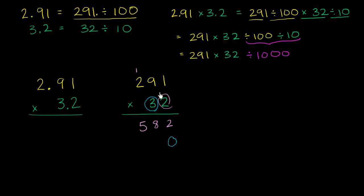So 30 times 1 is 30. That's why we say 3 times 1 is 3, but notice it's in the tens place right now. And then 3 times 9 is 27, carry the 2. 3 times 2 is 6, plus 2 is 8. And now we can add.